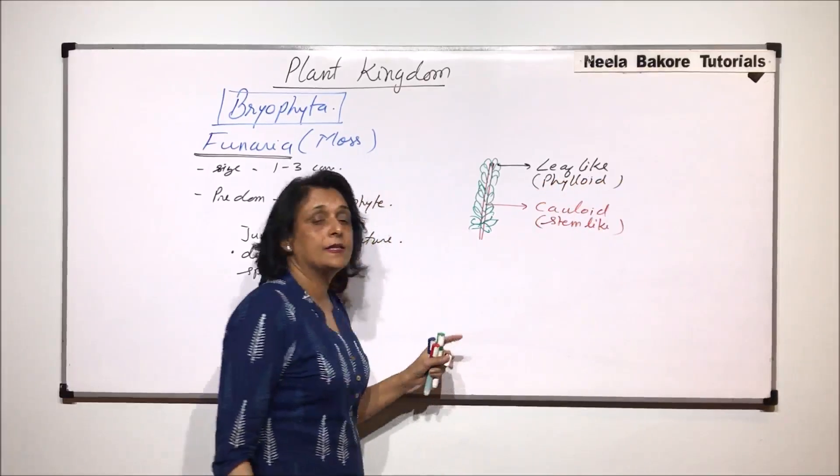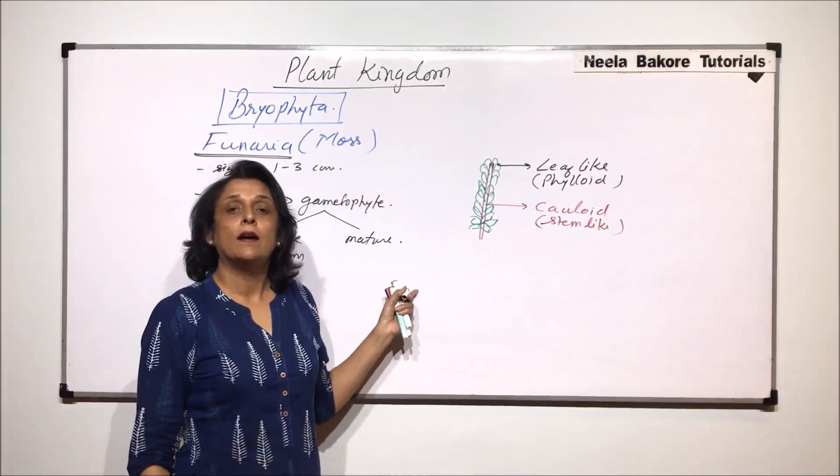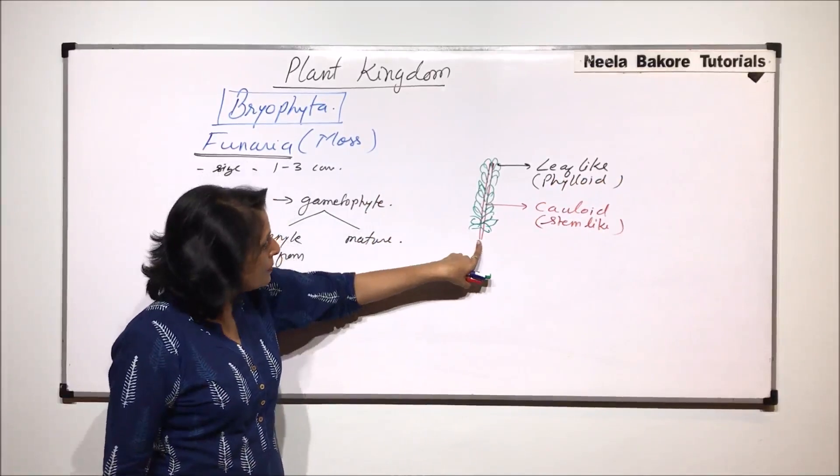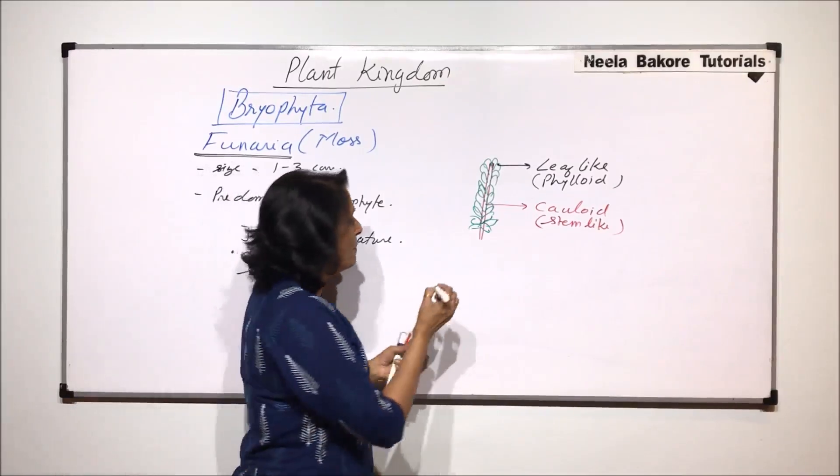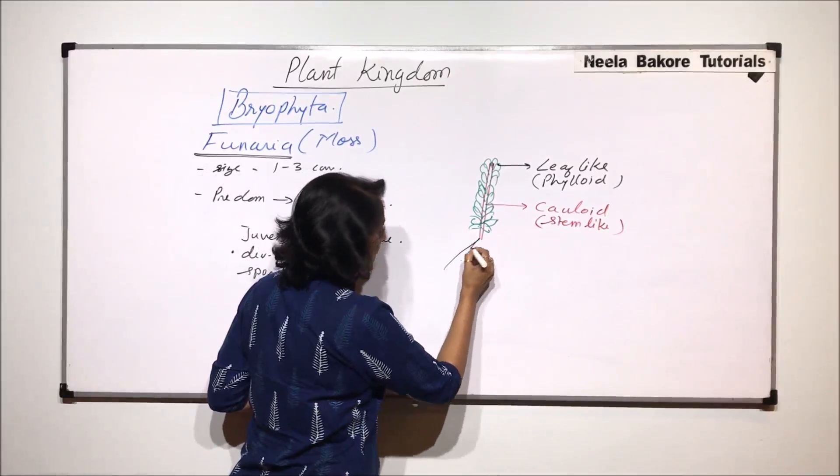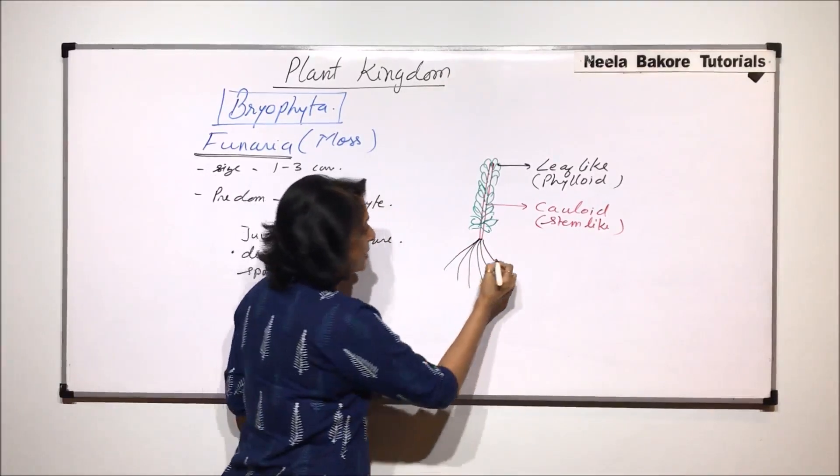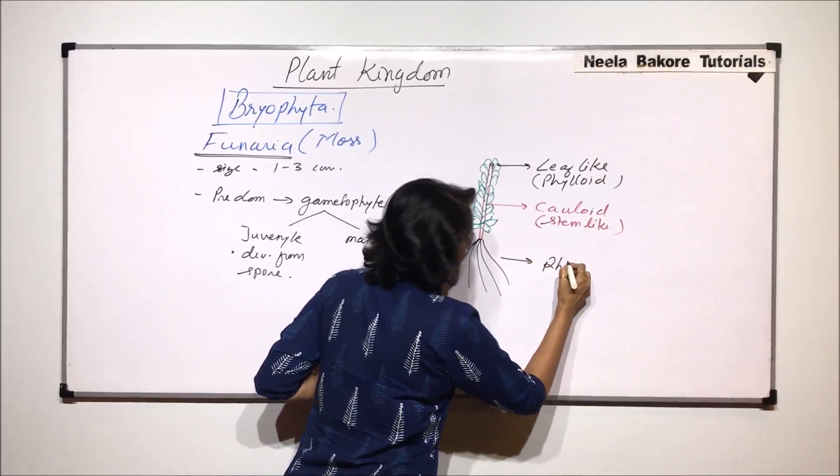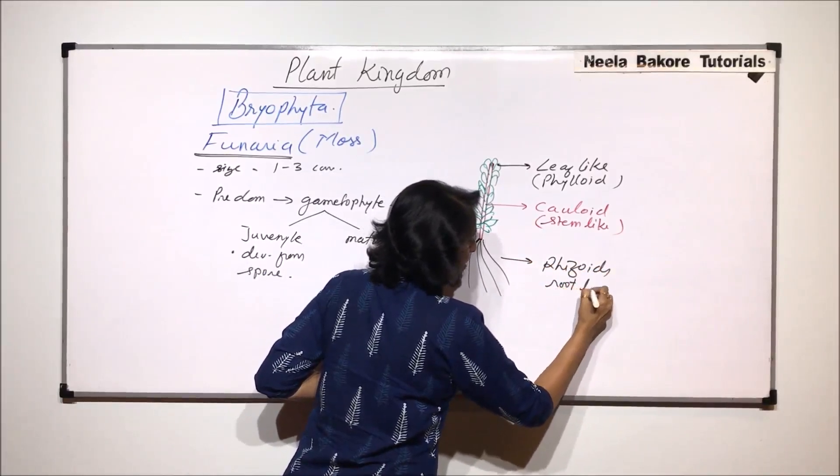Again the reason we have written it as like because it is not having the real vascular tissue. Now from the bottom of the stem arise many multicellular thread-like structures and these structures are known as rhizoids and these are the root-like structures.